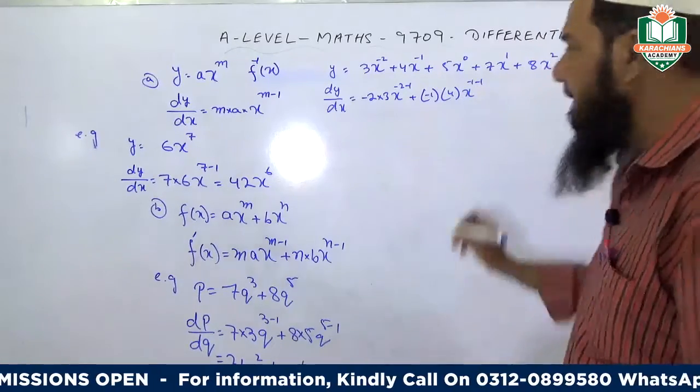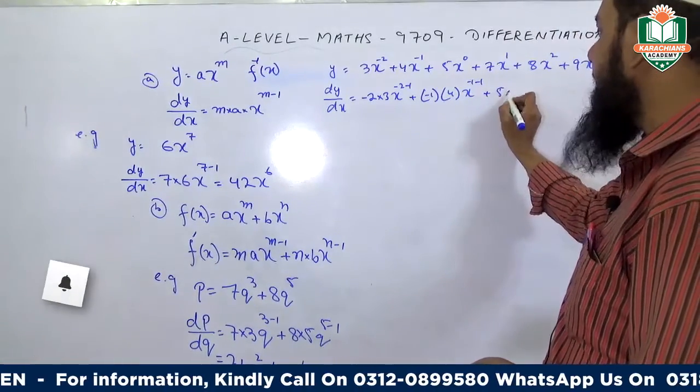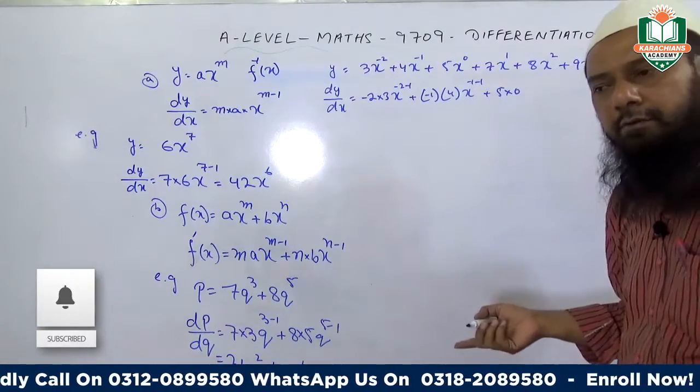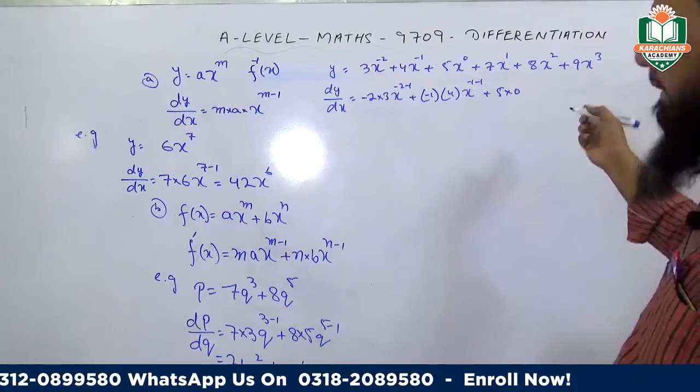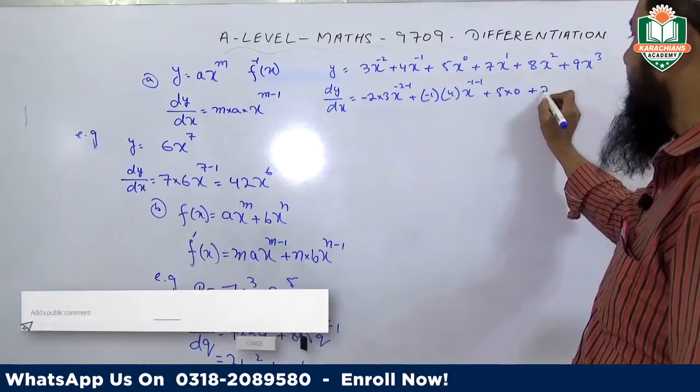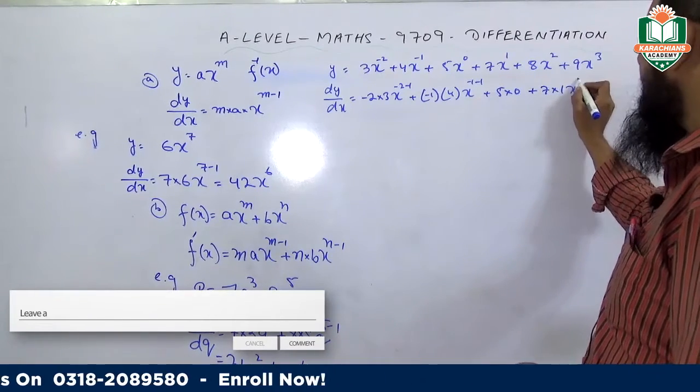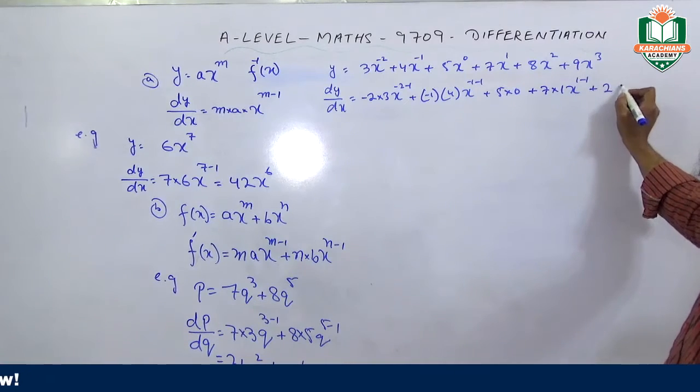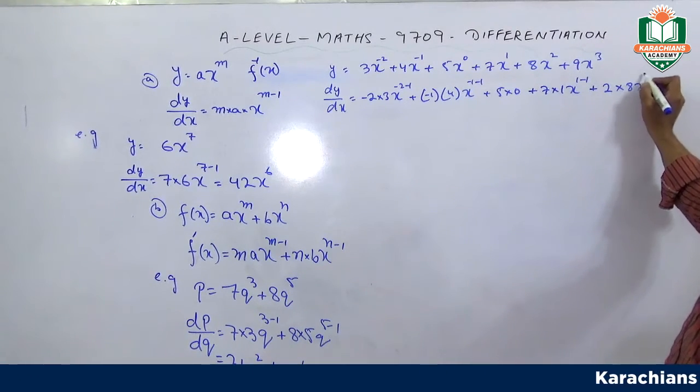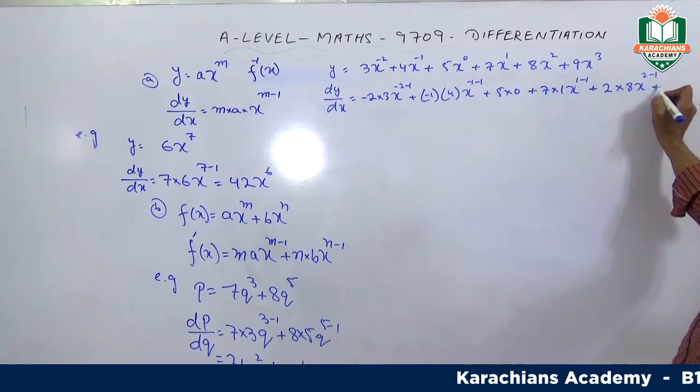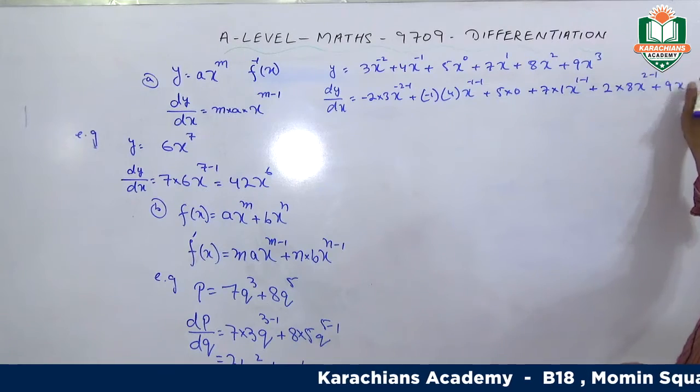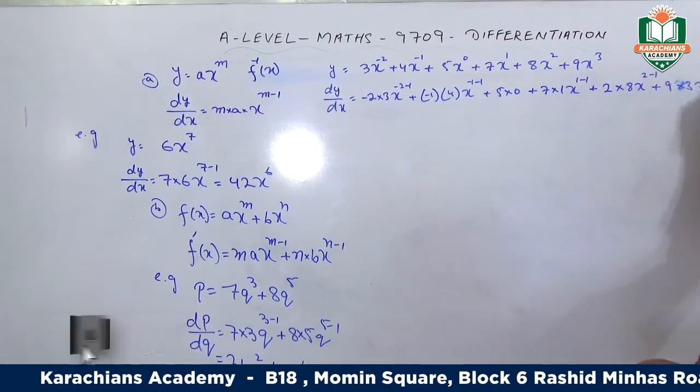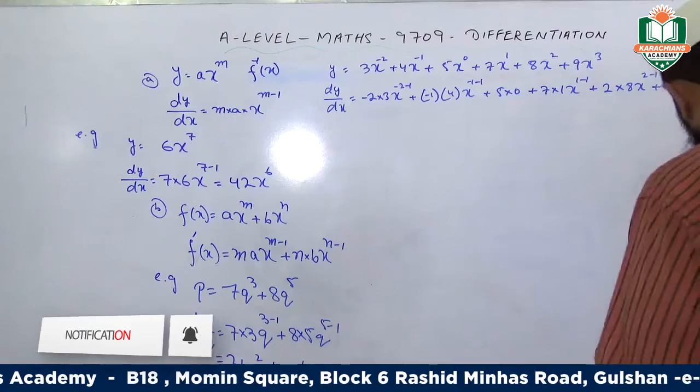When x term has power zero, it equals 1, so that term becomes zero. Then we have plus 1 times 7x^0, plus 2 times 8x^1, plus 3 times 9x^2.